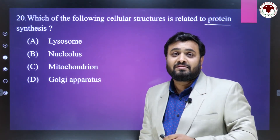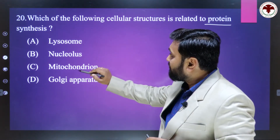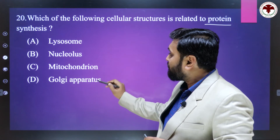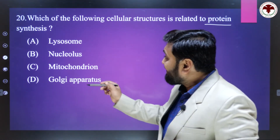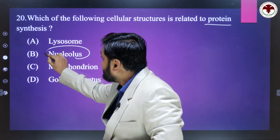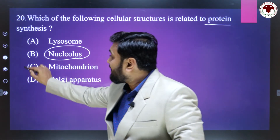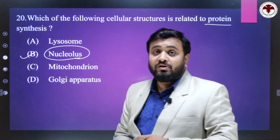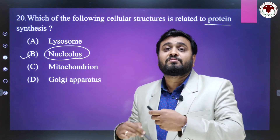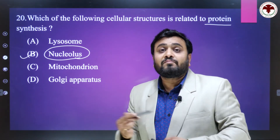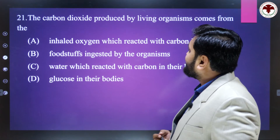Which cellular structure is related to protein synthesis? The options are lysosome, nucleolus, mitochondria, and Golgi apparatus — there is no ribosome listed, but indirectly the nucleolus is responsible for the formation of ribosomes. So the right answer is B — nucleolus is responsible for ribosome formation, and ribosomes form the proteins.